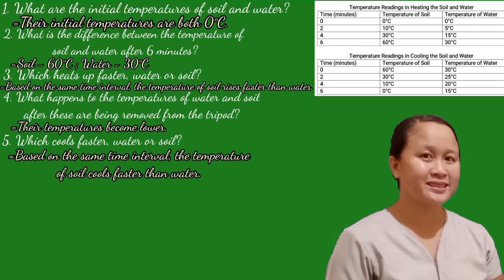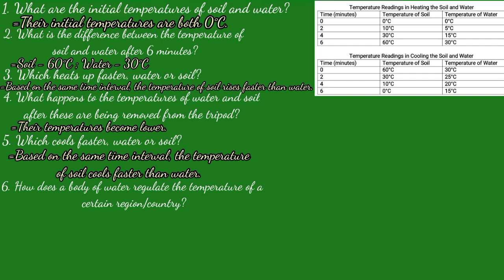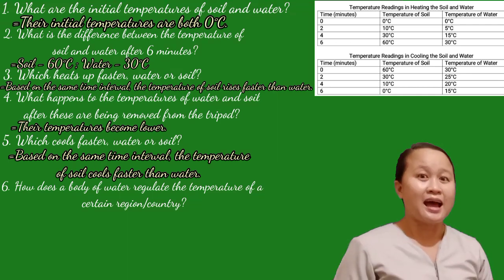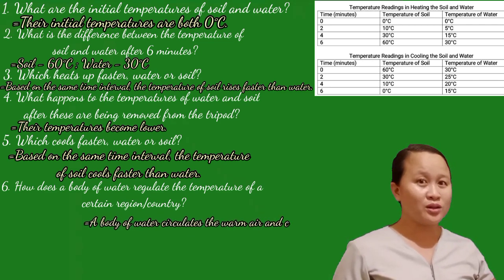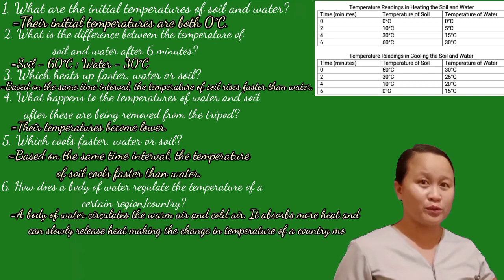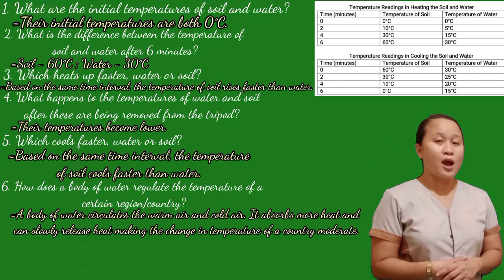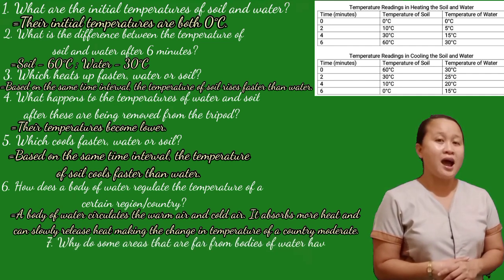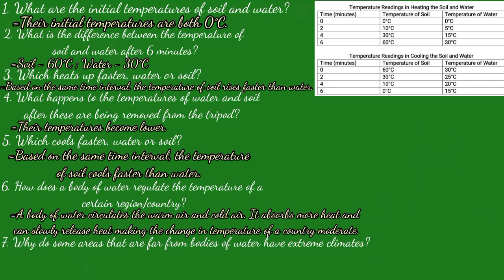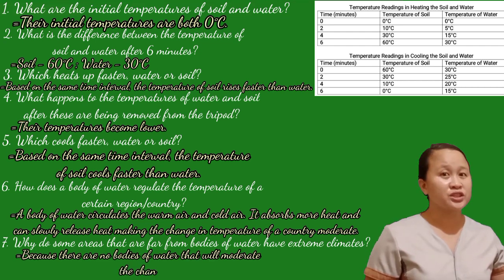Question number six: How does a body of water regulate the temperature of a certain region or country? The answer is a body of water circulates warm and cold air. It absorbs more heat and can slowly release heat, making the change in temperature of a country moderate. The last question is: Why do some areas far from bodies of water have extreme climates? The answer is because there are no bodies of water that will moderate the change in temperature in the location.